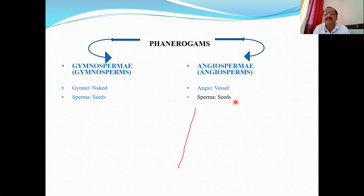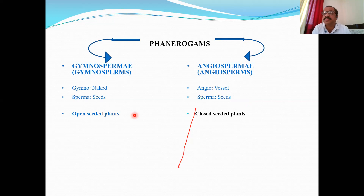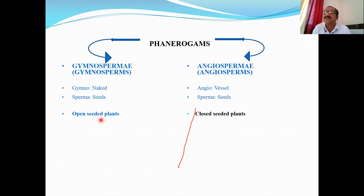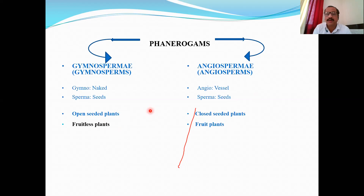In angiosperms, ovules are enclosed in the ovary, so after fertilization they become seeds within a fruit. In gymnosperms, the ovary is absent, so ovules are directly exposed; after fertilization, ovules become seeds but no fruit forms, making the seeds naked. Angiosperms are therefore called fruit plants, while gymnosperms are fruitless plants with naked seeds.